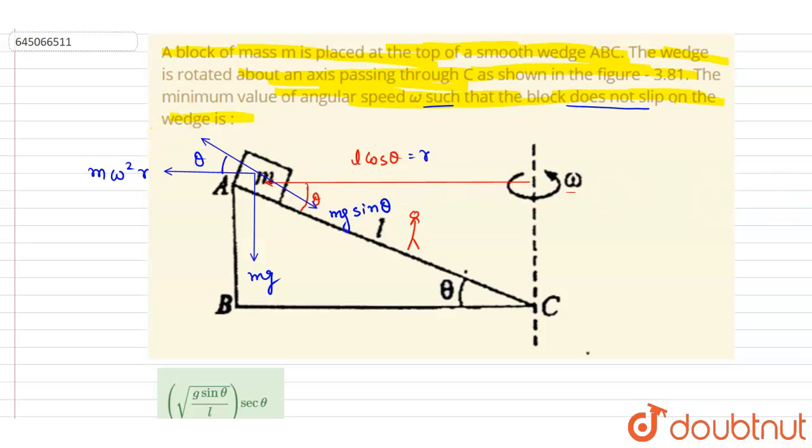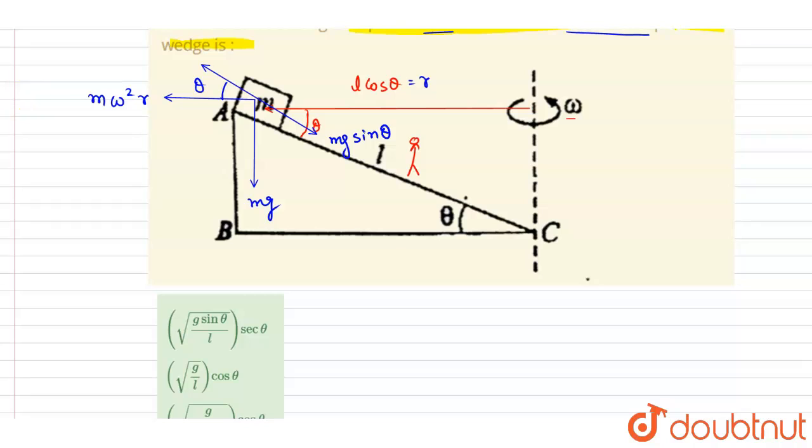So let me write down the net force along the plane should be zero. So I will write down m omega square r cos theta minus mg sin theta equals to zero. Net f net along the incline, along the incline should be zero.